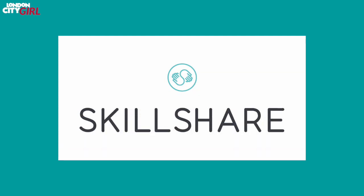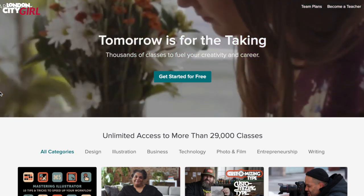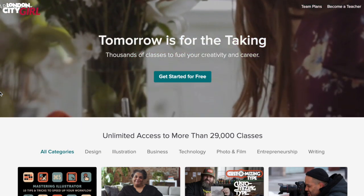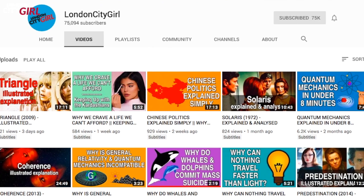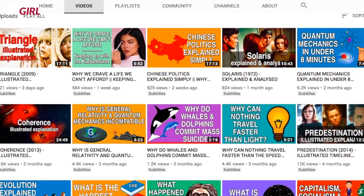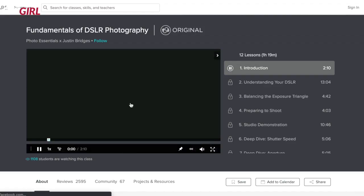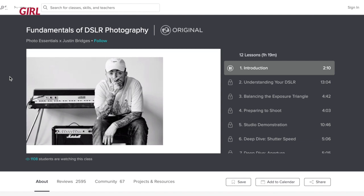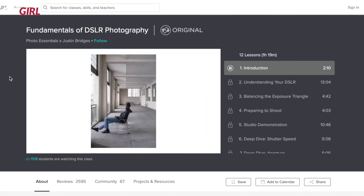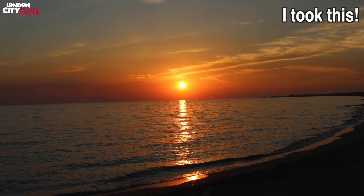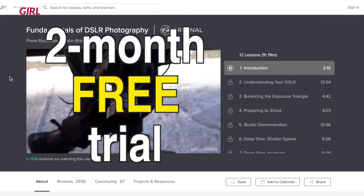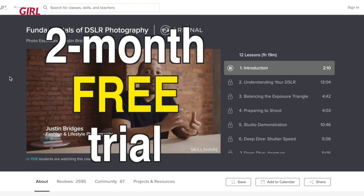Before we go any further, I want to take a moment to thank Skillshare for sponsoring this video. Skillshare is an online learning community with thousands of classes covering dozens of creative and entrepreneurial skills. London City Girl is a channel dedicated to education and learning, and partnering up with Skillshare has been a great experience. I actually signed up for my own free trial and I love it. I've completed a course on the fundamentals of DSLR photography, as that's definitely a weak point in my skill set, and I already see an improvement in the photos that I take as a direct result of taking this course. Sign up for a two-month free trial via the link in the description below and try out Skillshare for yourself.